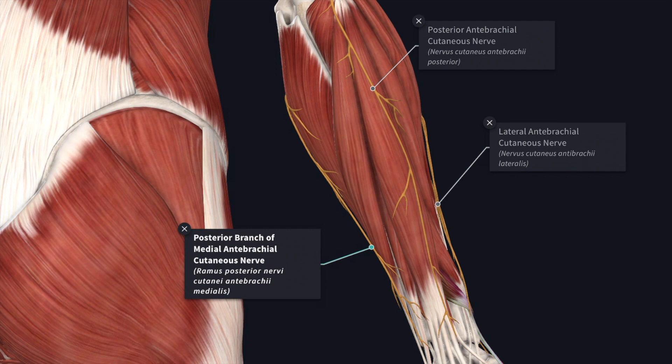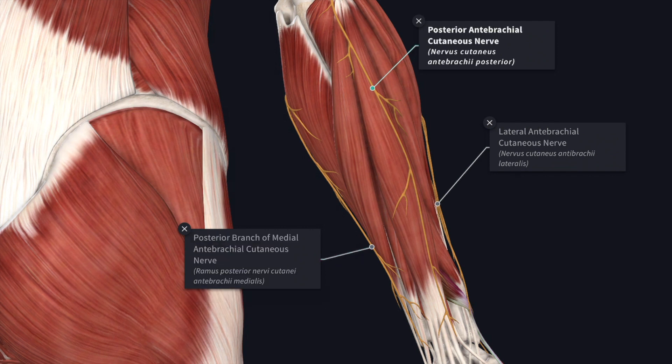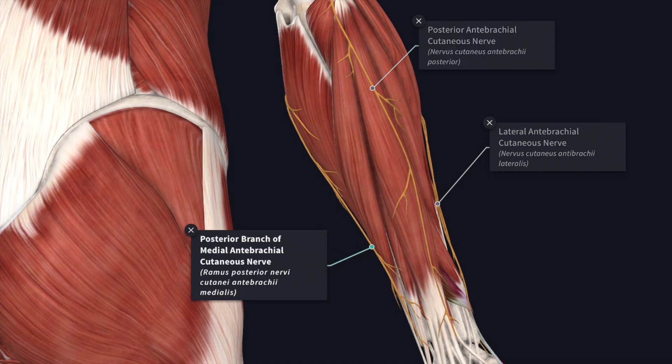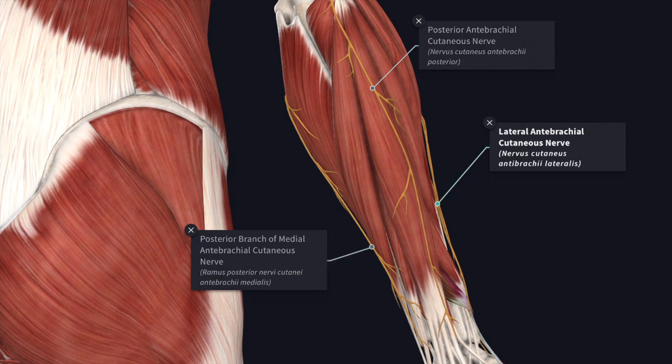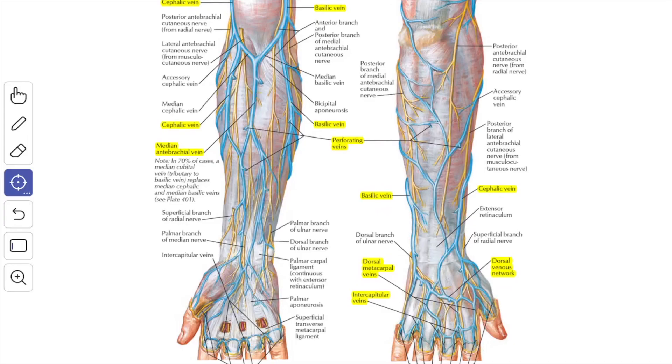The back of the forearm is supplied by the posterior cutaneous nerve of forearm, assisted by the medial and lateral cutaneous nerves of forearm. This is a diagrammatic representation.